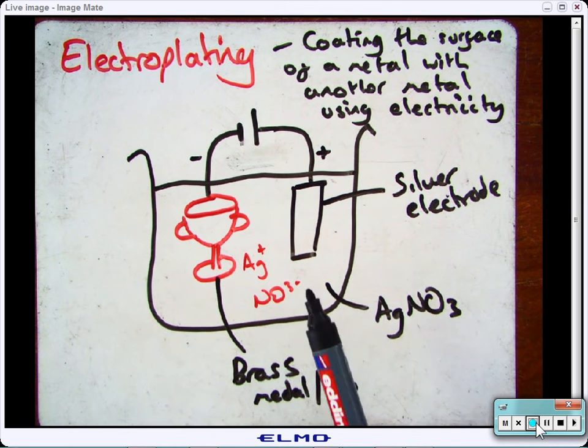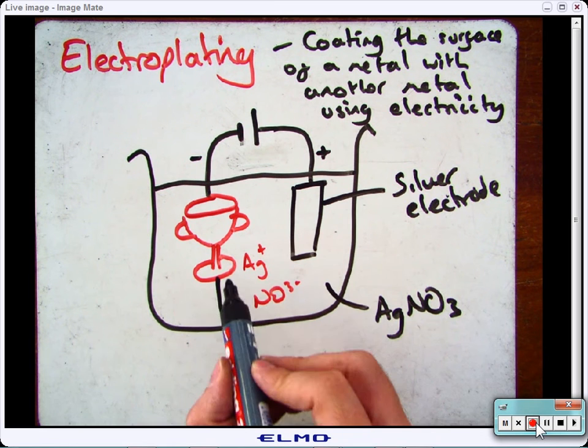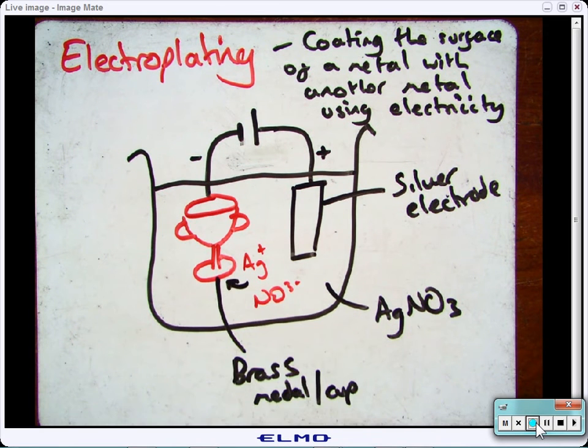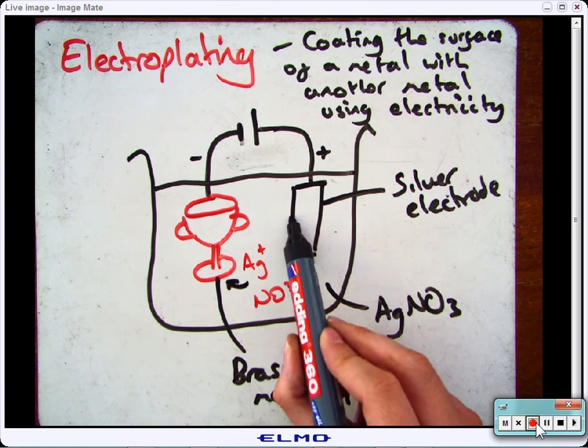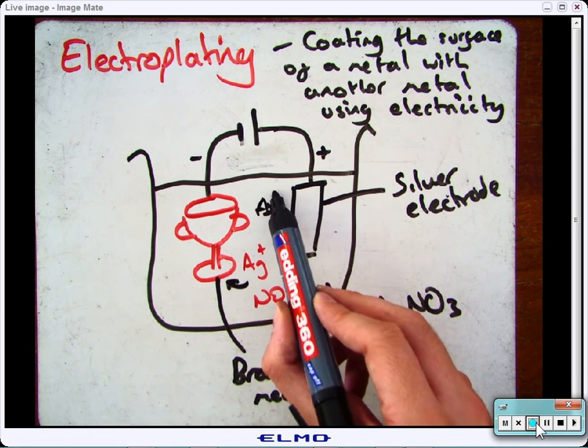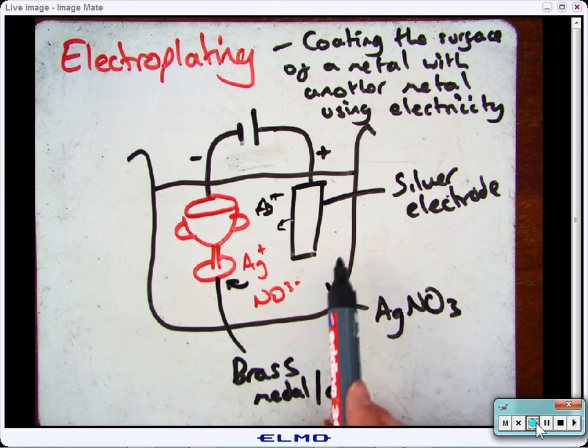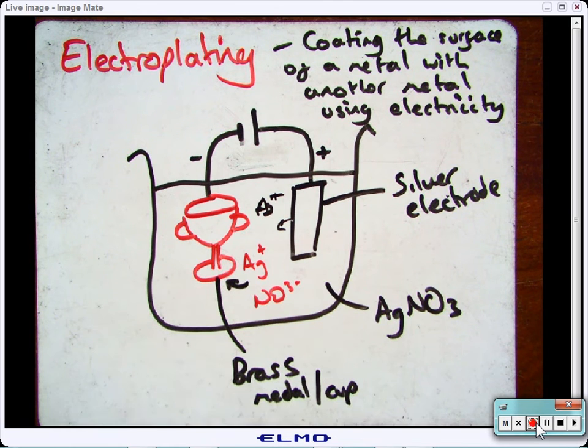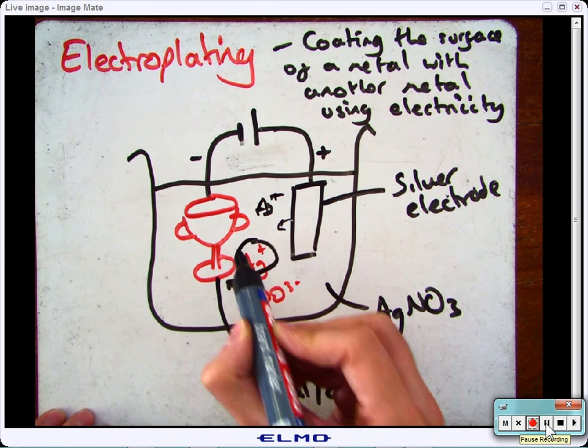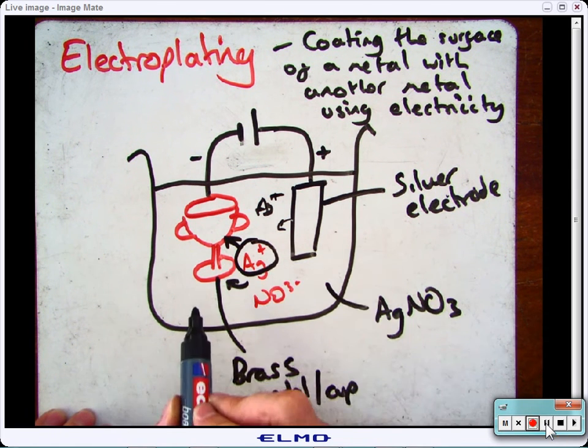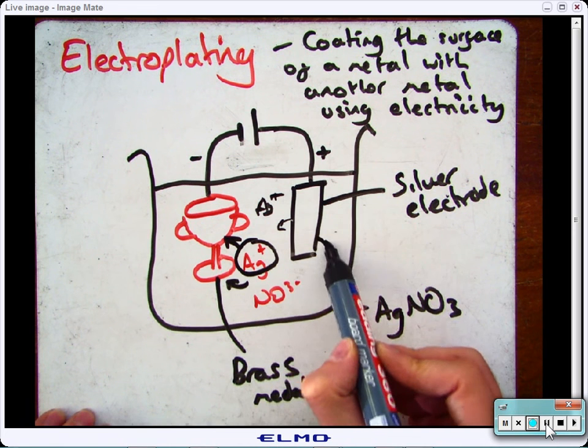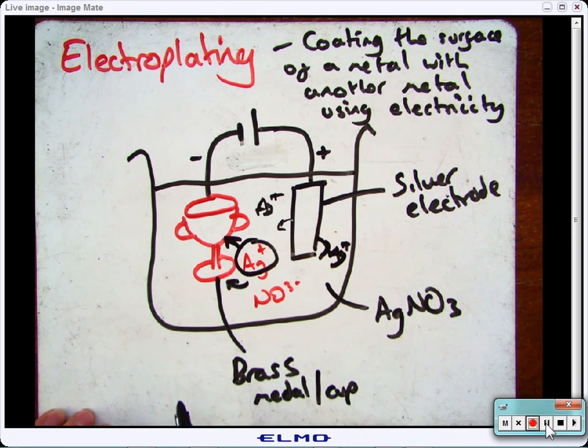Now what will happen is the silver ions from the electrolyte will move over onto the cup and get deposited on the brass cup. The anode will keep giving silver ions to the solution until the reaction is complete. To repeat, the silver ions from the solution go onto the cup. The silver electrode keeps putting silver ions into the solution and this will continue until the electroplating is complete.